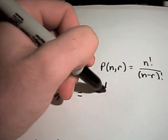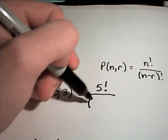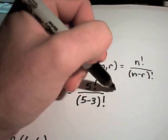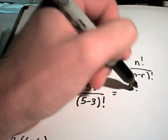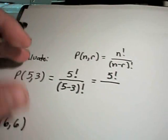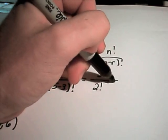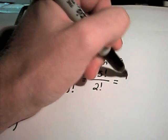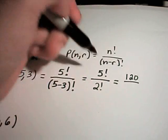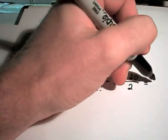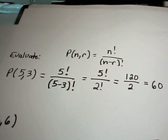You'll have 5 factorial on top, and then you just put in parentheses, you subtract the two values, 5 minus 3 factorial. Well, again on top, that's 5 factorial. 5 minus 3 is 2 factorial. You can check that 5 factorial is 120, 2 factorial is just 2, so we'll simply be left with 60.